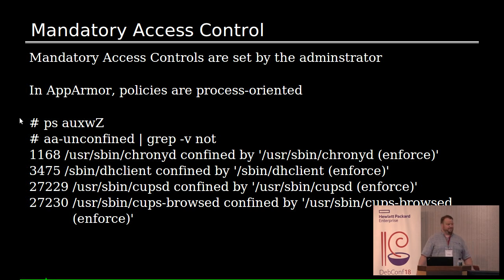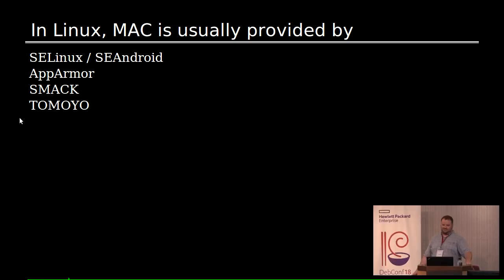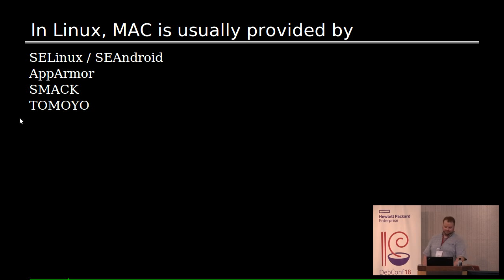In AppArmor, policies are process-oriented. You can see this using the Z flag to ps, and there's a handy wrapper aa-unconfined that shows you more readable information. On my laptop, a handful of programs are confined: the cron daemon, dhclient, cupsd, and cups-browsed — confined by different profiles. Linux systems have four major MAC varieties: SELinux (also called Android-security depending on context), AppArmor, Smack, and Tomoyo.